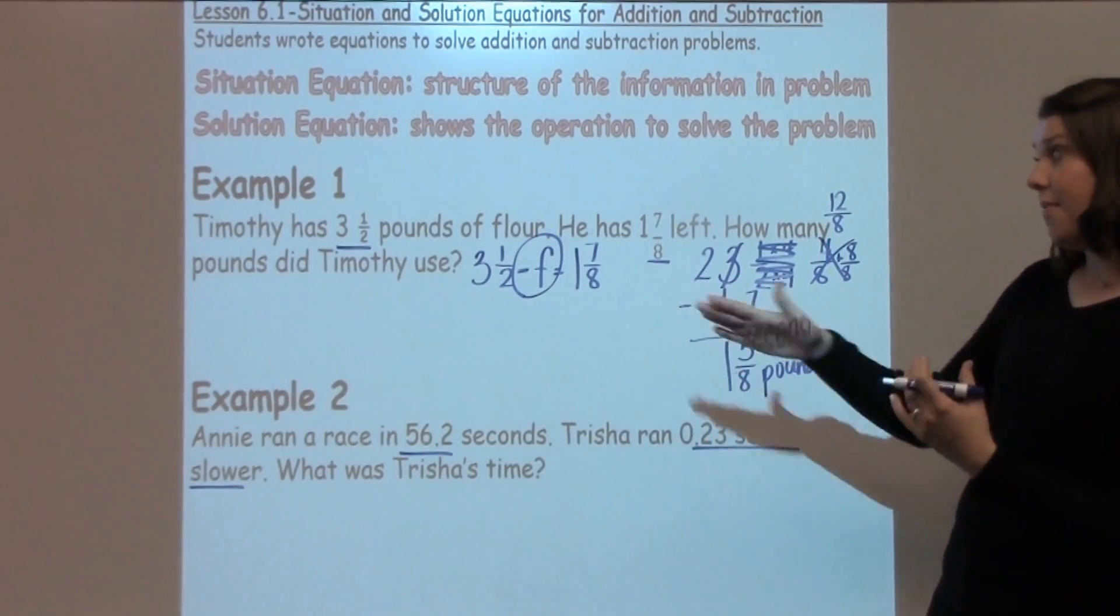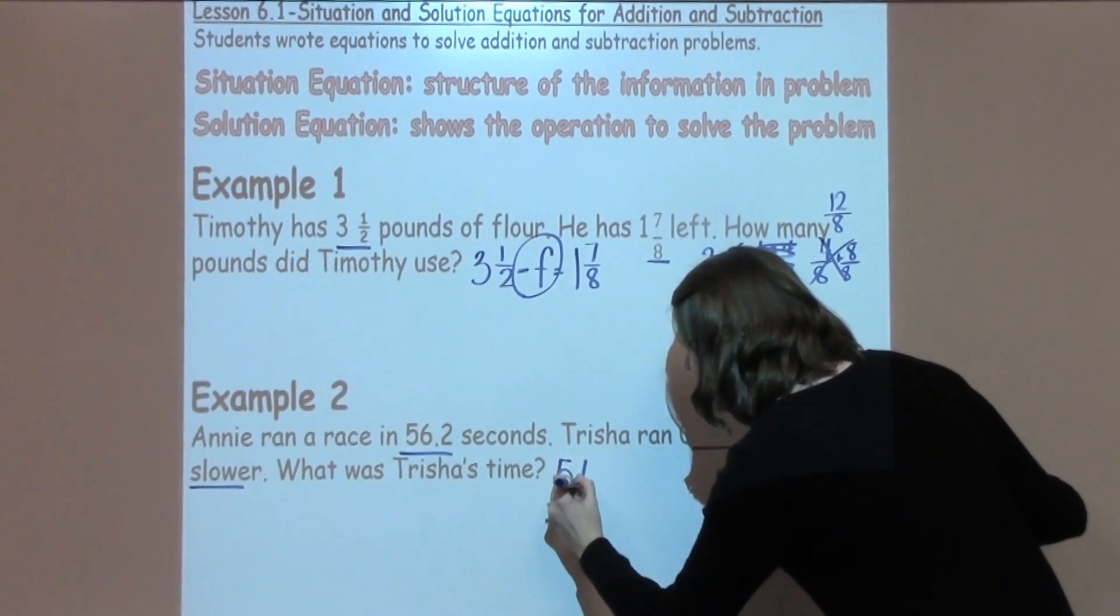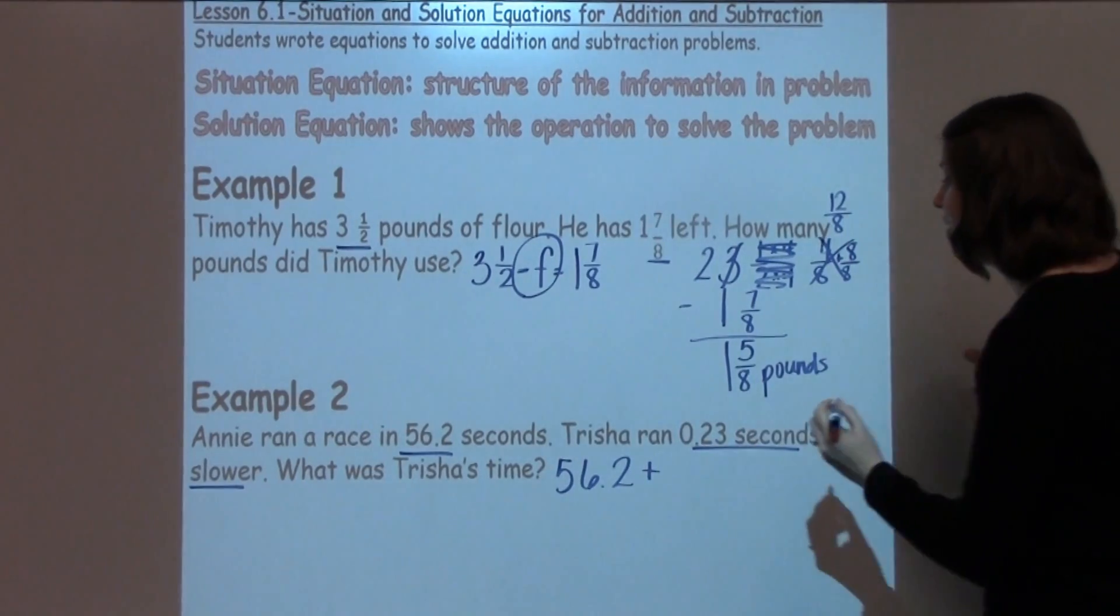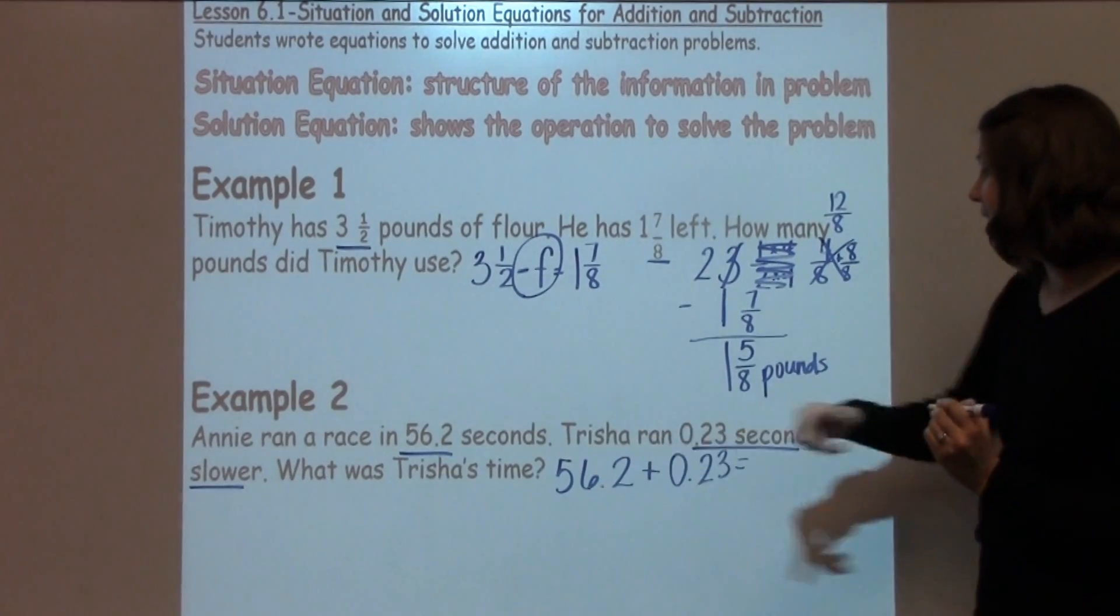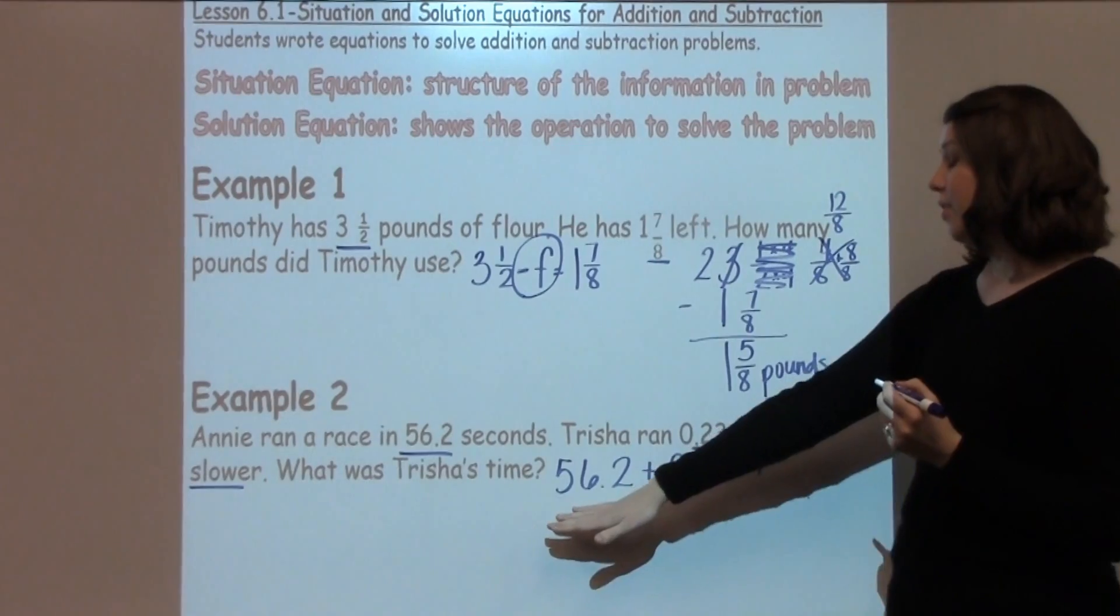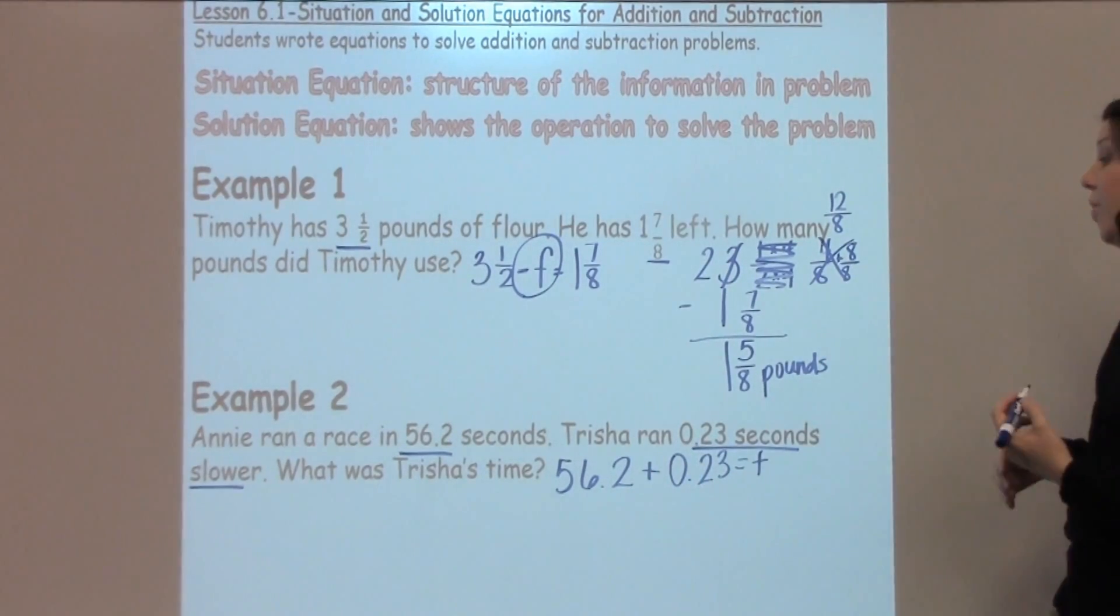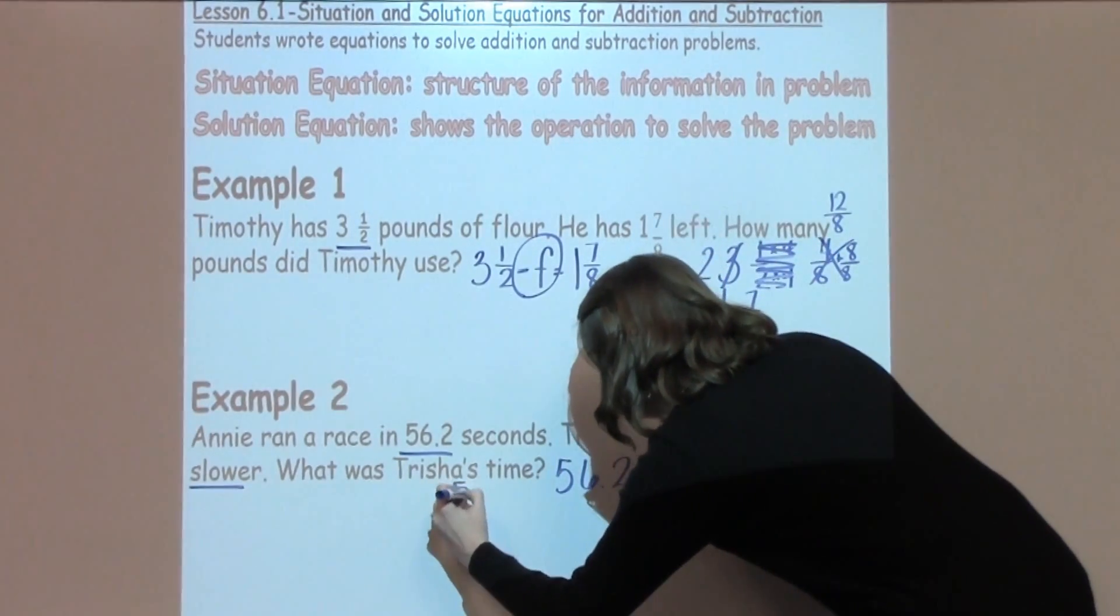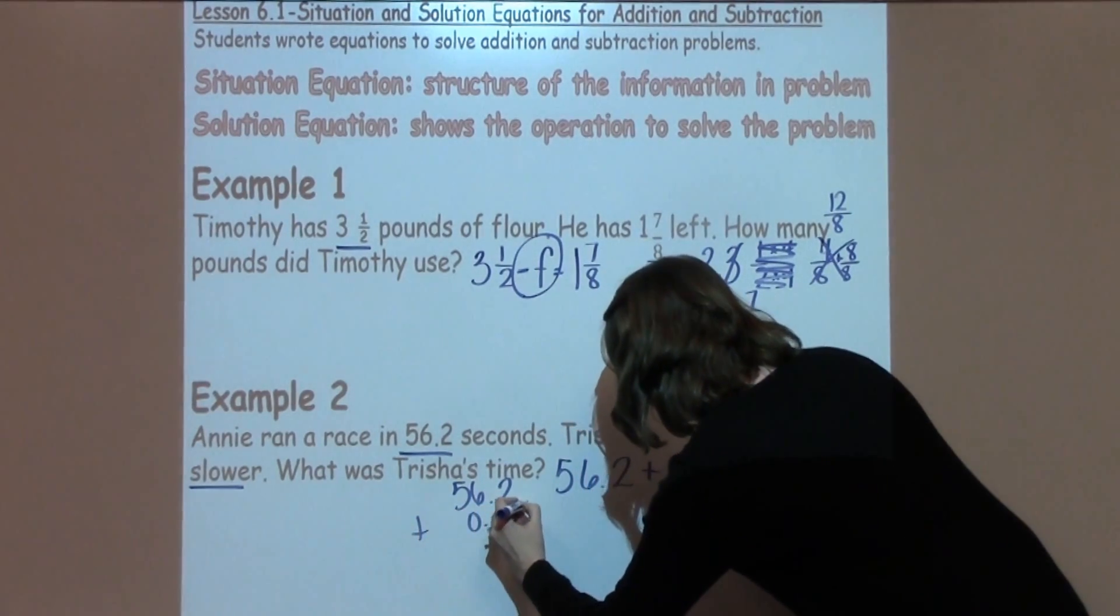So in this case, when I'm going to set up my equation, I'm going to take my 56.2 plus my 0.23, and that is going to give me, I'm going to write down T for Trisha's time. Now, as you look at this equation, you'll see there's a simple addition problem at this point, and students can go ahead and set it up. So what we would do is just rewrite it. I'm going to rewrite it down here: 56.2 plus 0.23.